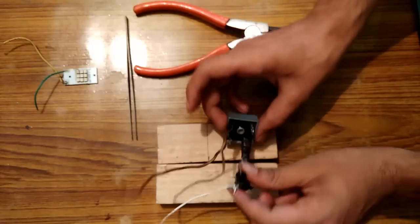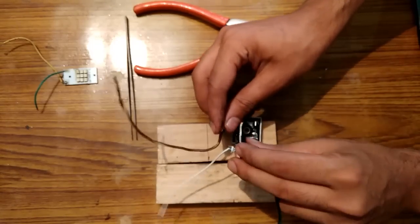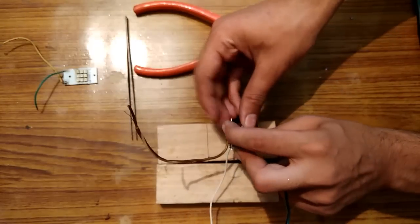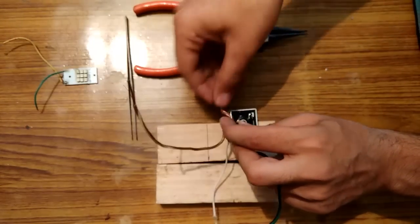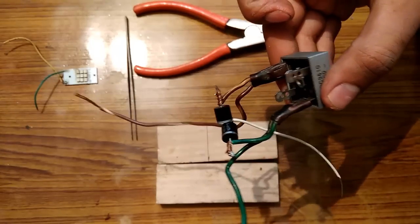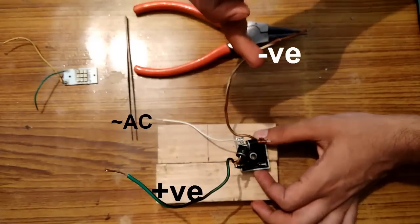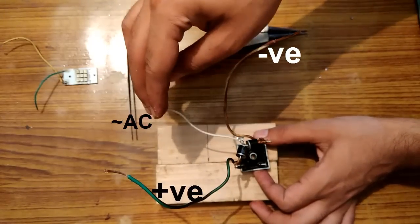And the positive of the diode to the negative, like this. So it is something like this. And this one is the positive, this one is the negative, and this one is the third AC.